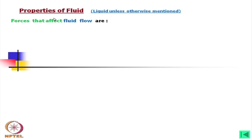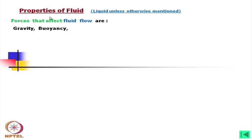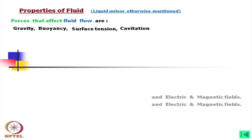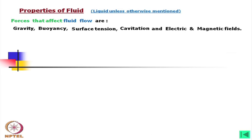Forces that affect fluid flow are: one, gravity; two, buoyancy; three, surface tension; four, cavitation; five, electric and magnetic fields. These are the main ones.